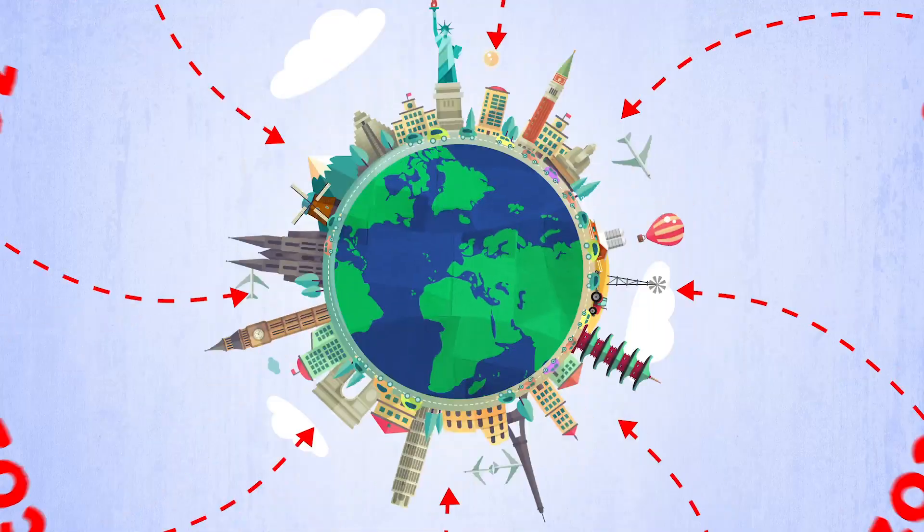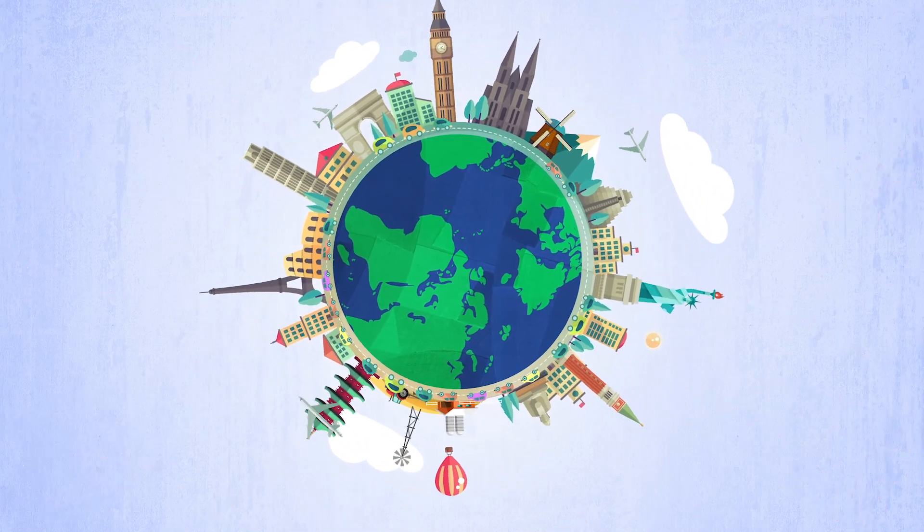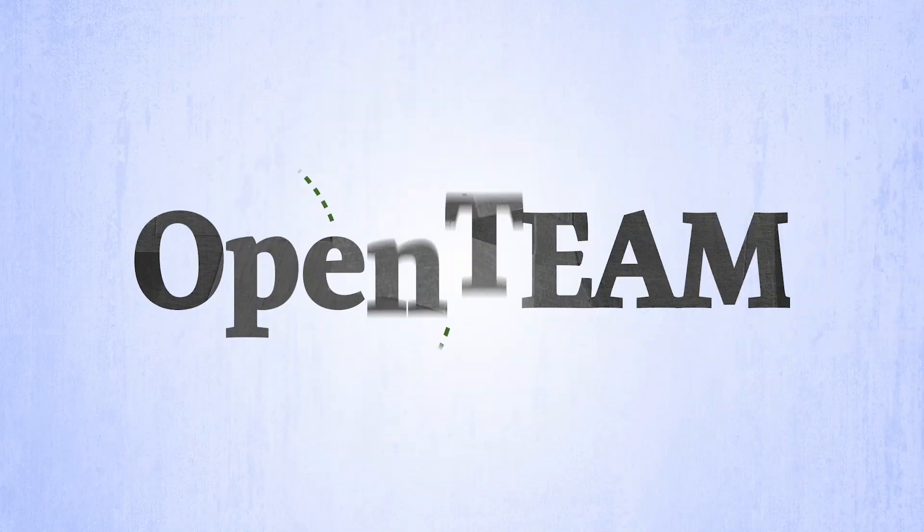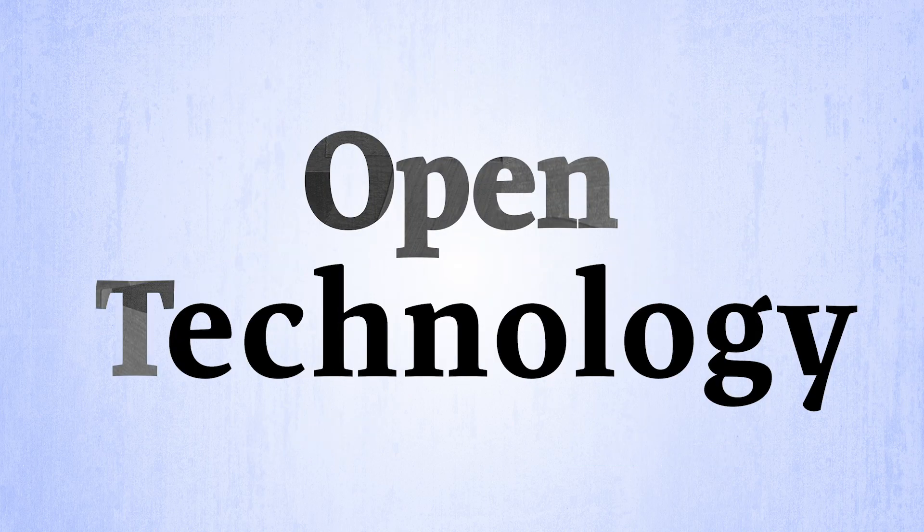Removing carbon can have a huge impact on slowing climate change. That is why we're launching OpenTeam: Open Technology Ecosystem for Agricultural Management.